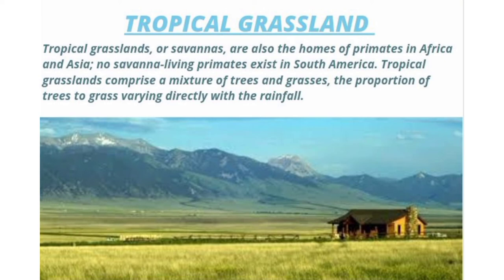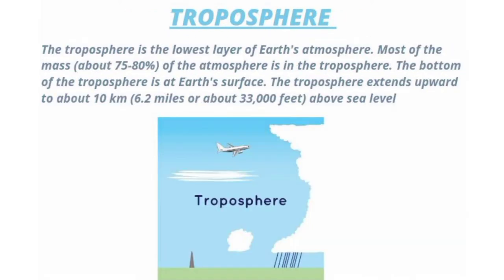Troposphere. The troposphere is the lowest layer of earth's atmosphere. Most of the mass — about 75 to 80% of the atmosphere — is in the troposphere. The bottom of the troposphere is at earth's surface. The troposphere extends upward to about 10 kilometers, or 6.2 miles, or about 33,000 feet above sea level.